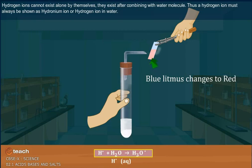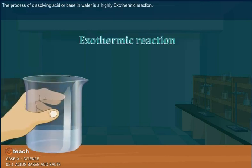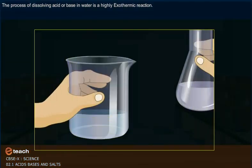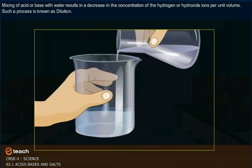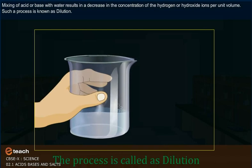Hydrogen ions cannot exist alone; they exist after combining with water molecules, so hydrogen ions must always be shown as hydronium ions (H₃O⁺). When a base is dissolved in water, it generates hydroxide ions. Bases which are soluble in water are called alkalis. The process of dissolving acid or base in water is highly exothermic, and it results in a decrease in concentration of hydrogen or hydroxide ions per unit volume — this process is called dilution.